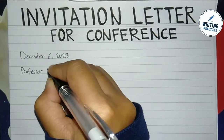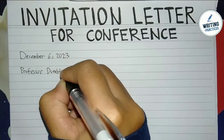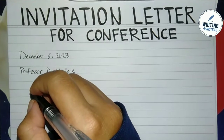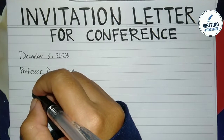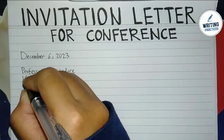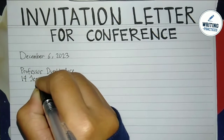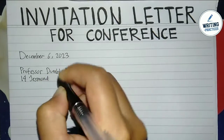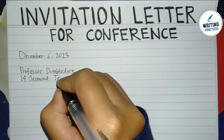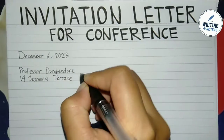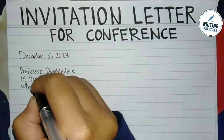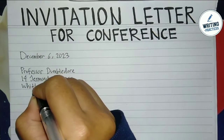First of all, write the date of the letter, and then write the personal information about the recipient. You have to write the full name, and if he or she has a title you have to write it as well — professor is an example. Write the address of the recipient's house, or if you have no idea, you can address it to his or her workplace such as a university. Write the number, the street name, the city, the state, and the zip code.